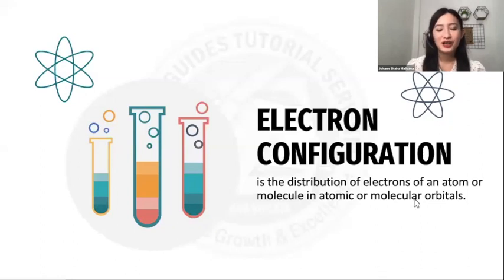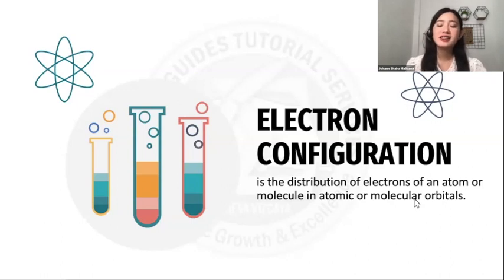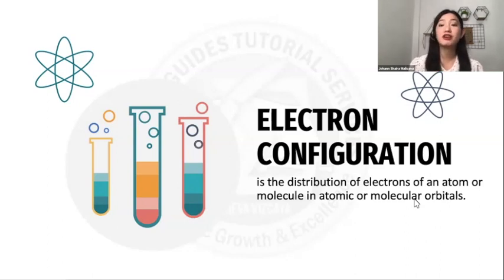After our discussion about molecules and ions, you are now ready for electron configuration. So what is electron configuration? It is a distribution of electrons of an atom or molecule in atomic or molecular orbitals. In short, electron configuration helps us to see how electrons are arranged in atomic orbitals for a specific element.